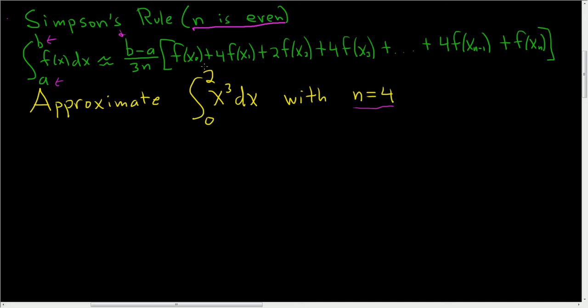There's a really easy way to memorize this, just memorize the 3n and memorize the b minus a, and look at the coefficients. It's 1, 4, 2, 4, et cetera, 4, 1. So the coefficients are 1, 4, 2, 4, 2, 4, 1. It always ends in 1, it always ends in 4, 1 as well.